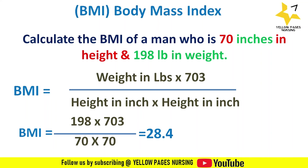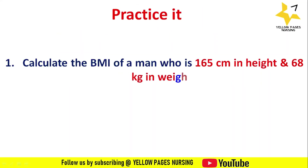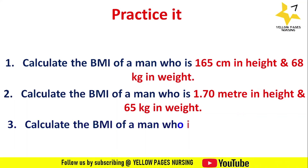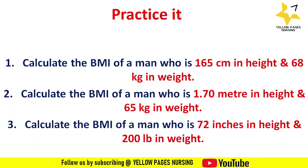Here are a few examples for your practice. First: calculate the body mass index of a man who is 165 centimeters in height and 68 kilograms in weight. Second: calculate the body mass index of a man who is 1.70 meters in height and 65 kilograms in weight. Third: calculate the body mass index of a man who is 72 inches in height and 200 pounds in weight. You can do these examples and mention the answers in the comment box.